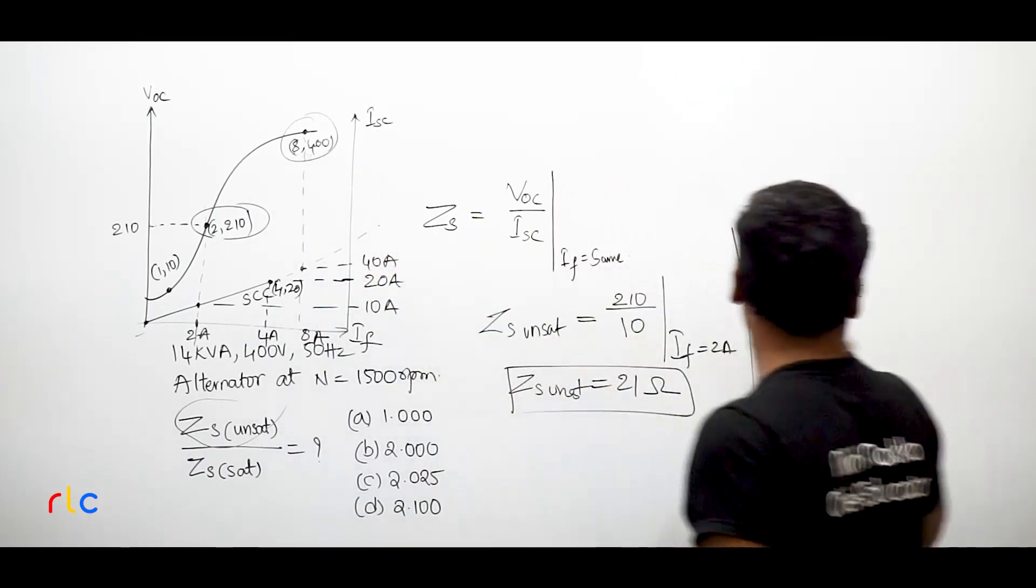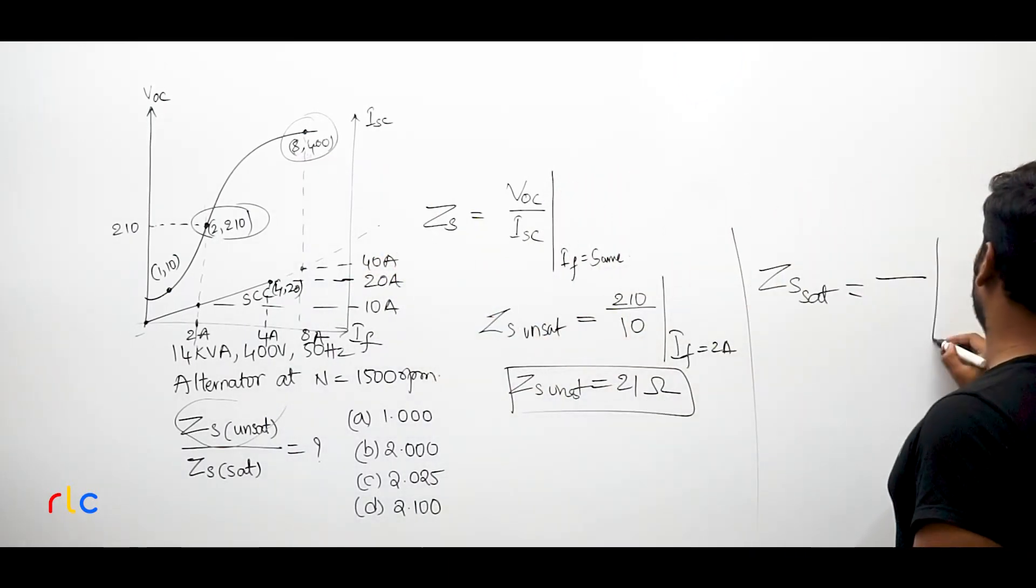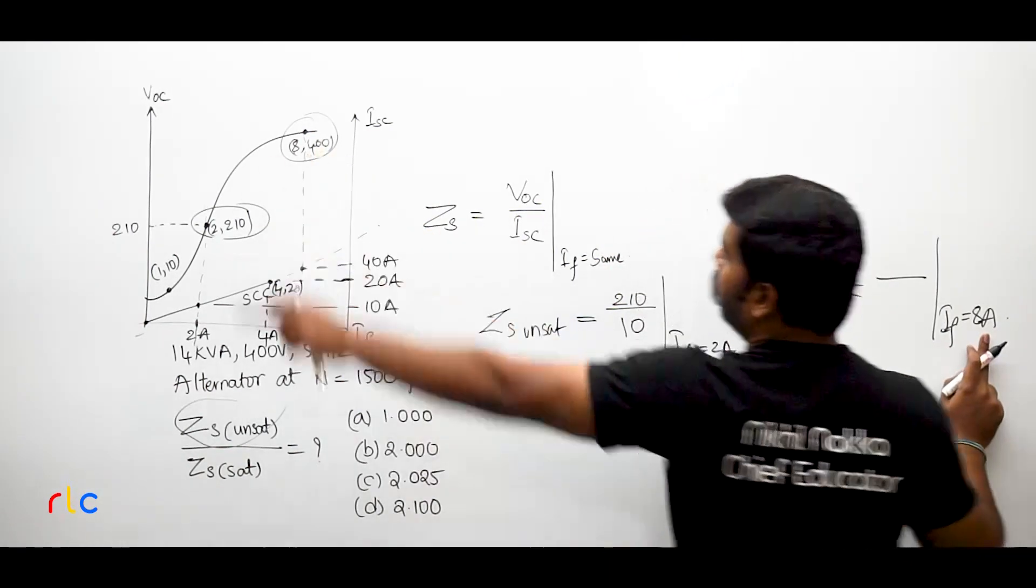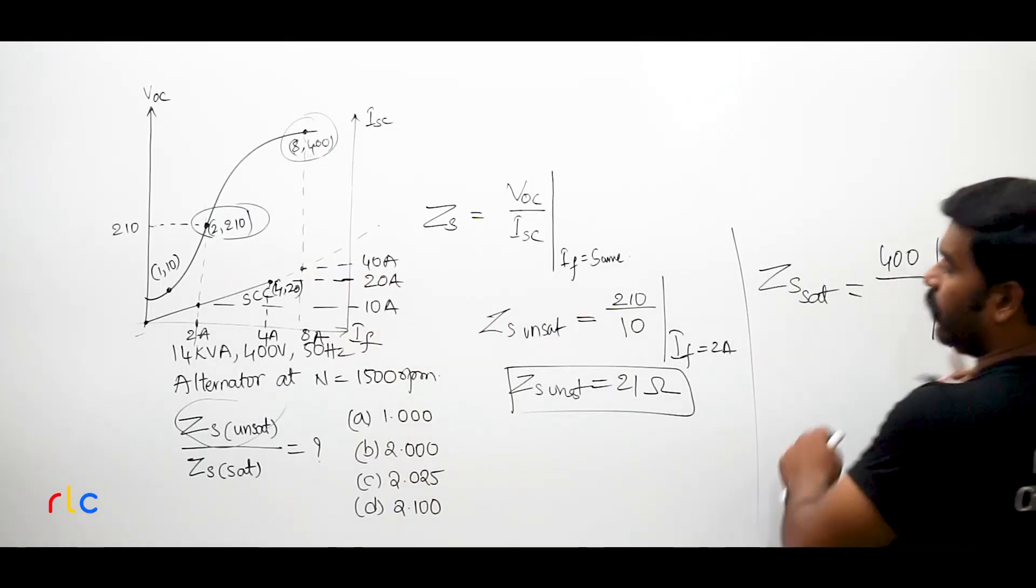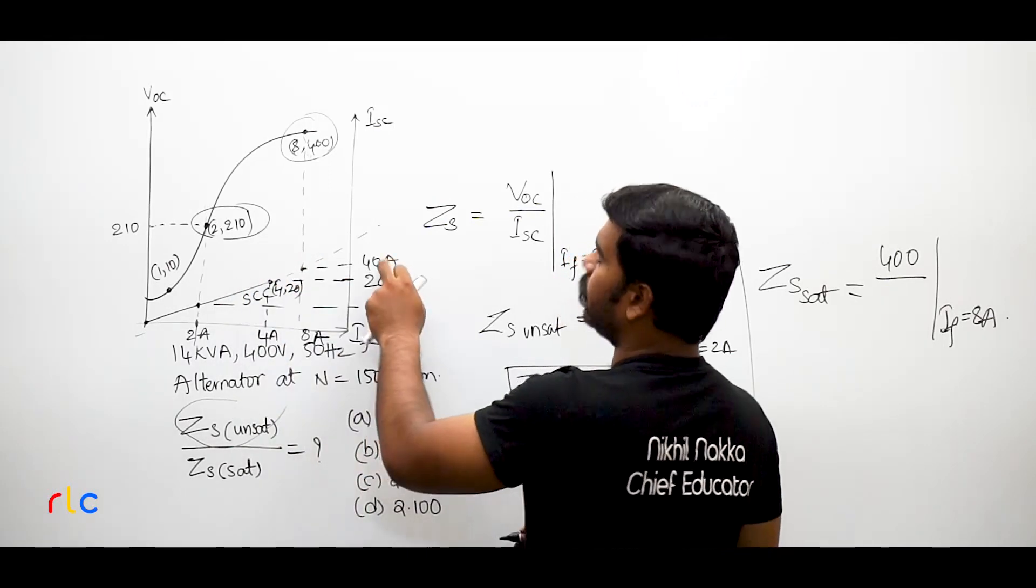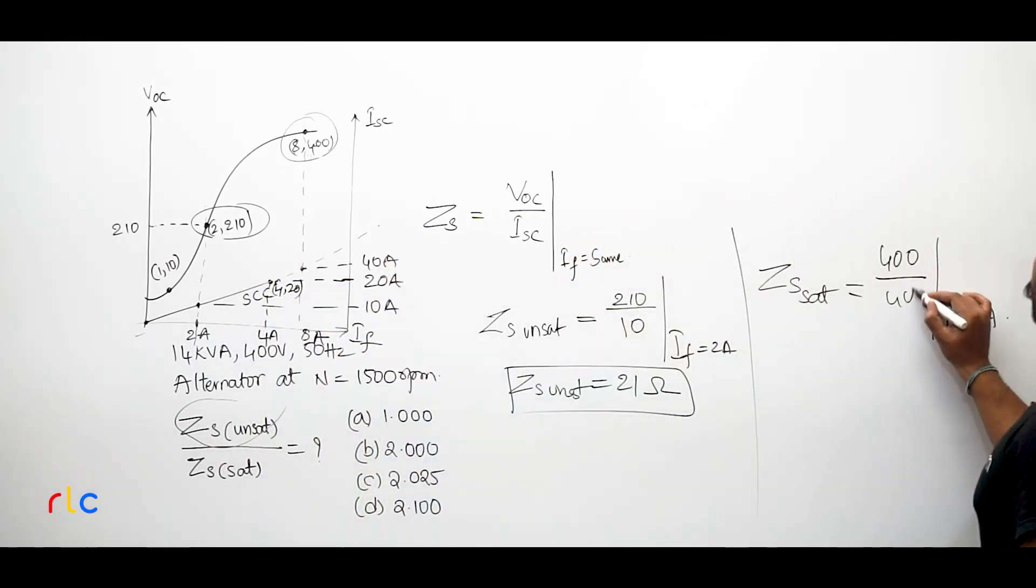So whatever VOC by ISC I am taking should be at the same field current of 8 Amperes. So at 8 Amperes field current what is the voltage? Y axis, 400 V. Now when the field current would be 8 Amperes, what would have been the short circuit current? 40 Amperes, has already found 40 Amperes. So if you strike them down what you will get? 10 Ohms.